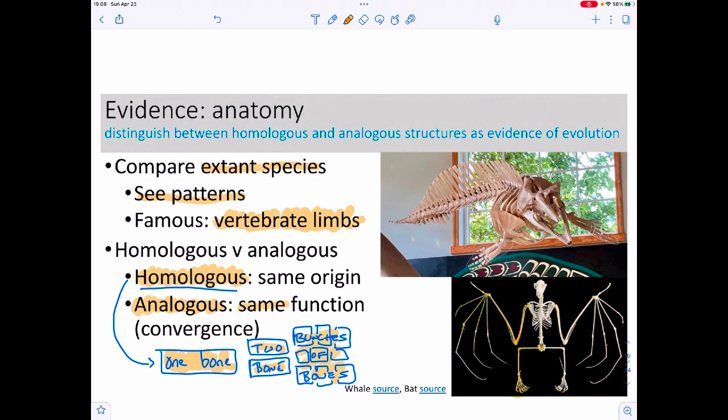This is in contrast to what we call analogous structures, which are ones that have the same function but how you got to that point might differ a little bit. That's a phenomenon that we call convergence, meaning we're approaching the problem from two different starting points and we get to similar answers.